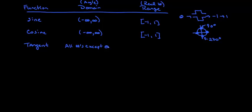Theta cannot be equal to 90 degrees plus 270, which is 90 degrees plus 180, plus another 180, plus another 180, plus another 180. So we're going to write it as 180k, where k is an integer.